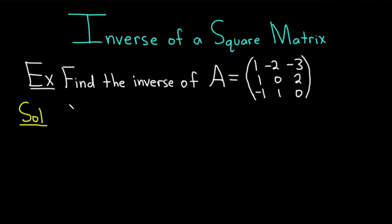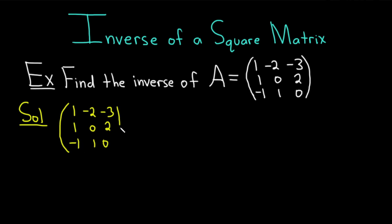So step 1 is to write the following. You write a parenthesis and take your 3 by 3 matrix: 1, negative 2, negative 3, 1, 0, 2, negative 1, 1, 0. Then you draw a line, and on the right side you write the 3 by 3 identity matrix, which is 1, 0, 0, 0, 1, 0, and 0, 0, 1. Copying down your matrix here and inserting the identity matrix on the right.